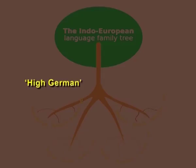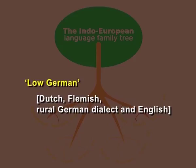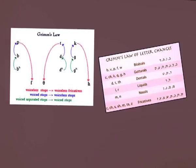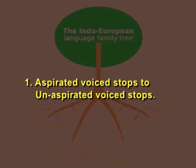The High German speakers are the Germans and the Austrians, and the Low German speakers are Dutch, Flemish, and rural German dialects — and English. Grimm's Law, or the first sound shift, helps to explain the consonant changes from Indo-European to Germanic.